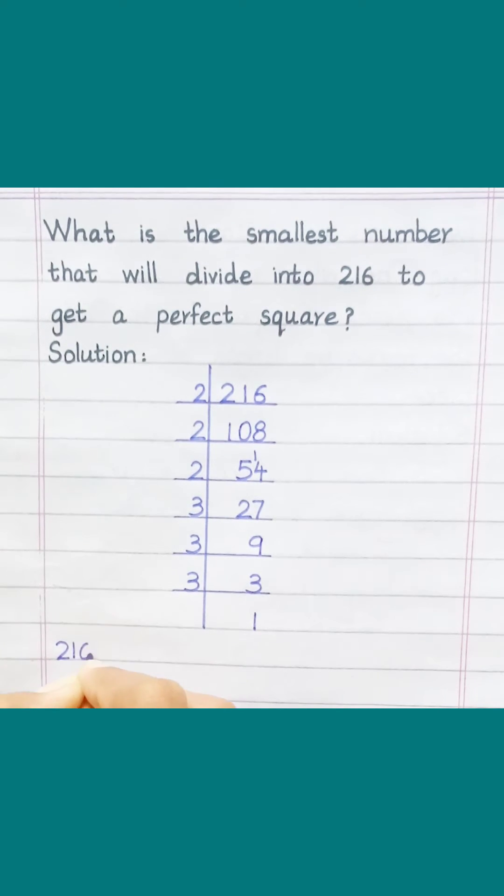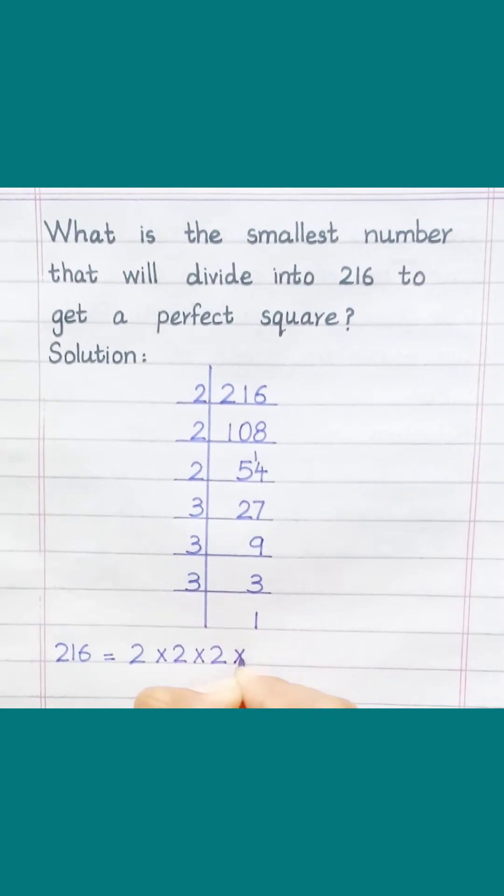216 equals 2 multiply 2 multiply 2 multiply 3 multiply 3 multiply 3.